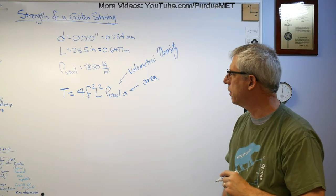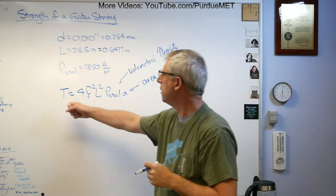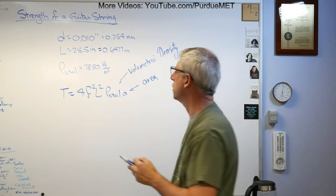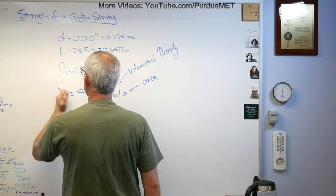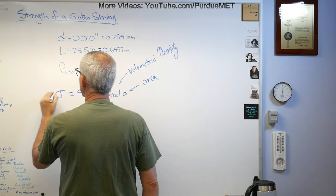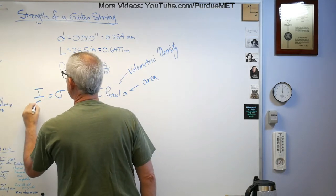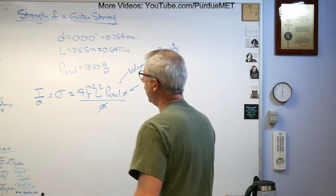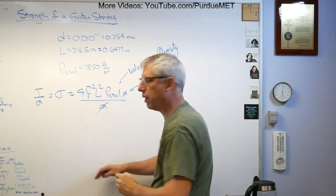This is not running mass anymore, times A, which is the area of the string. So there's what we got right now. It turns out it's kind of a pain in the neck to run this in terms of force because we really want stress. We want to find out what the strength of the string is. That is tension over area, so I'm just going to divide that by area and area cancels out.